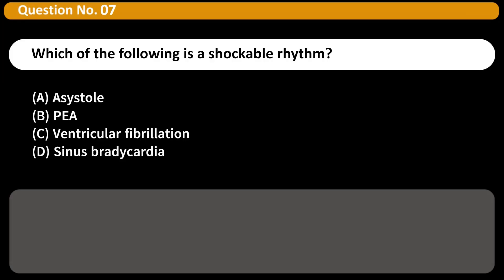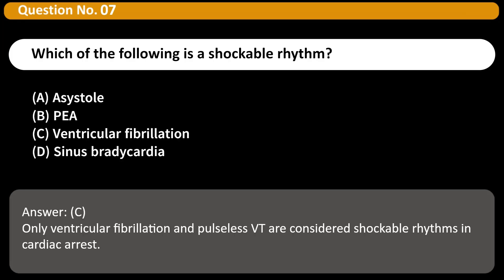Which of the following is a shockable rhythm? A. Asystole. B. PEA. C. Ventricular fibrillation. D. Sinus bradycardia. Answer: C. Only ventricular fibrillation and pulseless VT are considered shockable rhythms in cardiac arrest.